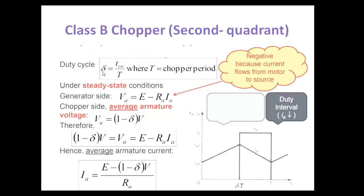The duty cycle delta equals T_on divided by T, where T is the chopping period. Under steady-state condition, from the generator side: V_A = E − R_A·I_A. From the chopper side: V_A = (1 − delta)·V. Therefore, (1 − delta)·V = E − R_A·I_A, and the average armature current equals (E − (1 − delta)·V) divided by R_A.